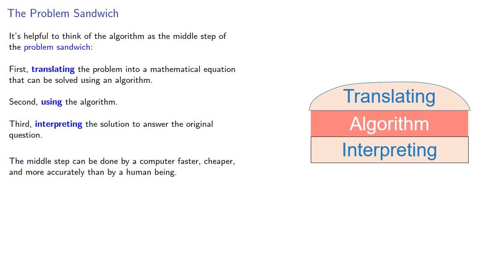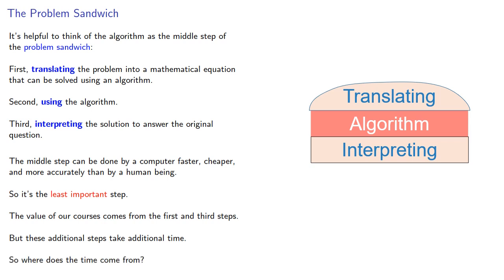can be done by a computer faster, cheaper, and more accurately than by a human being. So in many respects, it's the least important step. The value of our courses comes from the first and third steps, but these additional steps take additional time. So where does that time come from?